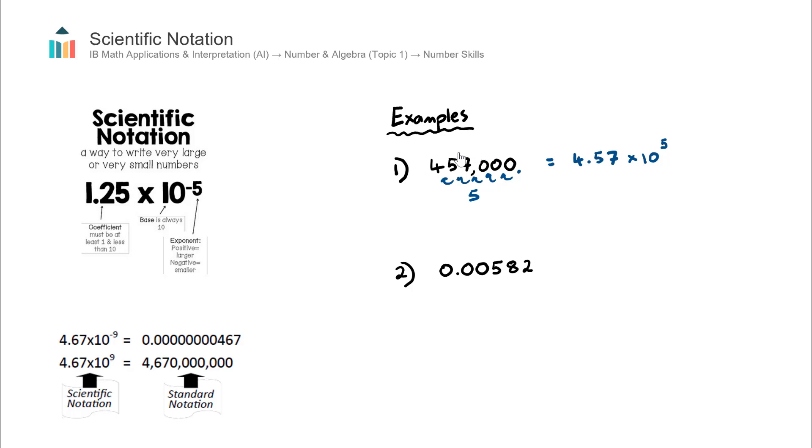Because this is a large number, the power, or the exponent, will be positive. If it's a small number, like the second example which we'll get to in a second, the power will actually be a negative number. This is a very small number, the power is negative.